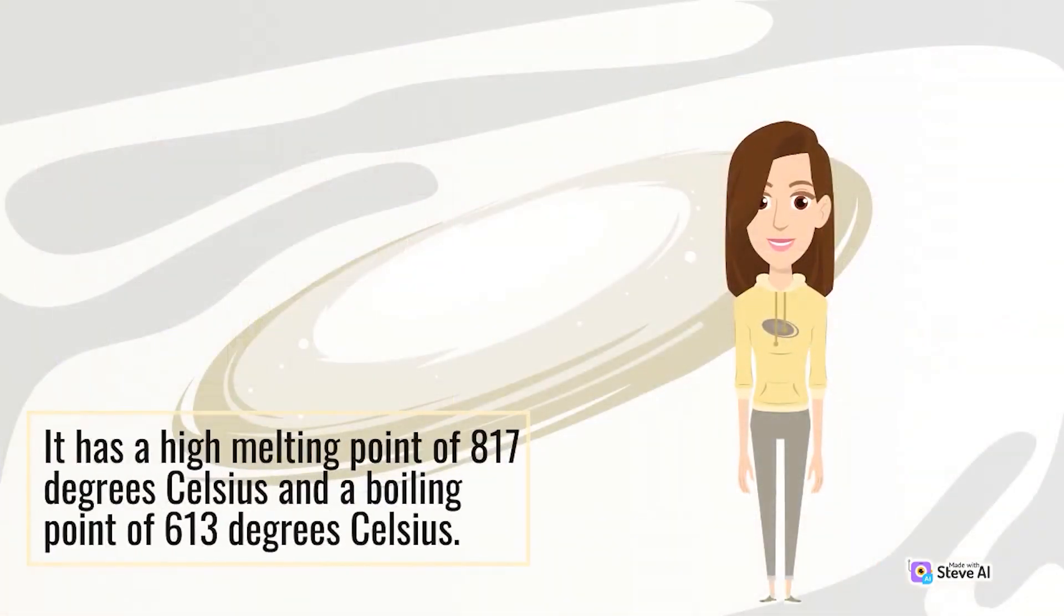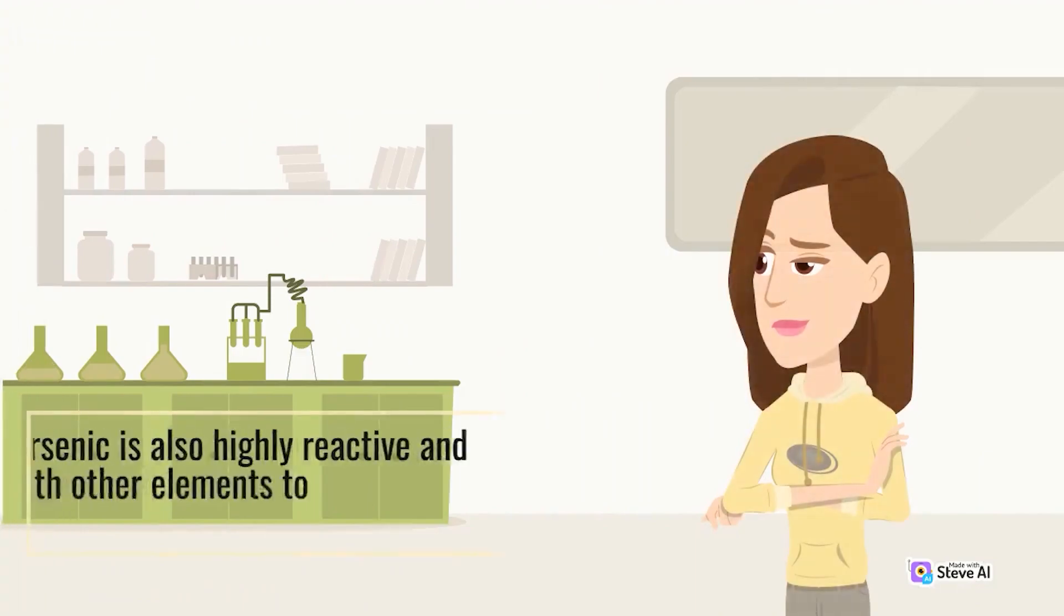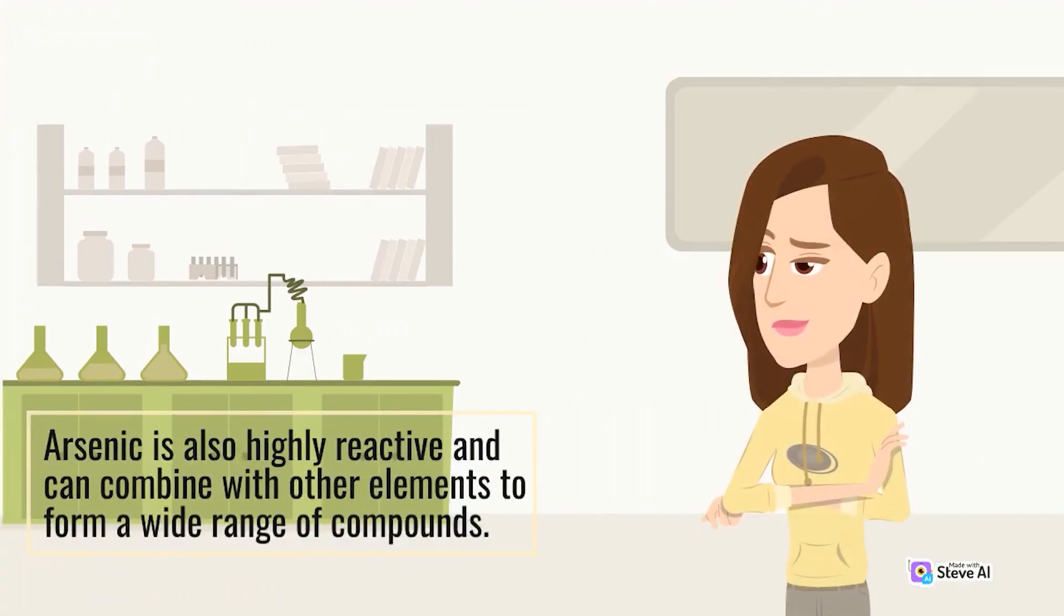It has a high melting point of 817 degrees Celsius and a boiling point of 613 degrees Celsius. Arsenic is also highly reactive and can combine with other elements to form a wide range of compounds.